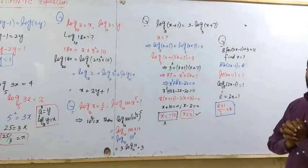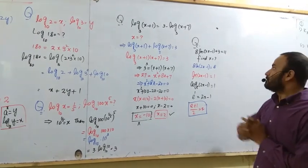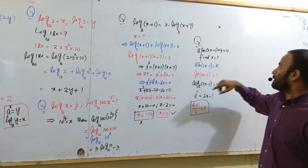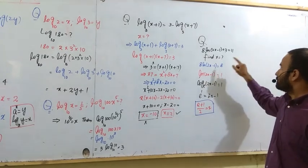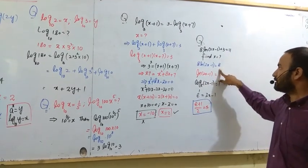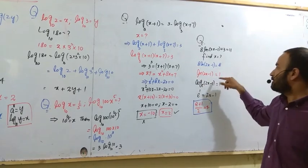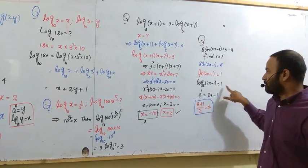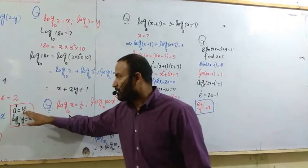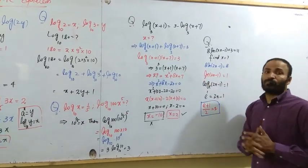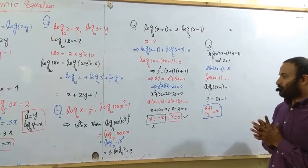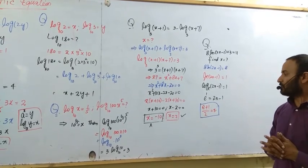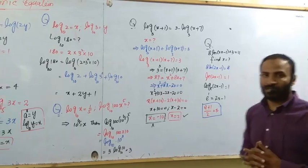When a natural logarithm is given: 8 ln(2x-1) plus 3 equals 11. Subtract 3 from both sides to get 8. Divide both sides by 8 to get 1. This logarithm can be written as log base e of (2x-1) equals 1. Convert to exponential form: e equals 2x minus 1. Therefore e plus 1 divided by 2 equals x. Thank you very much.